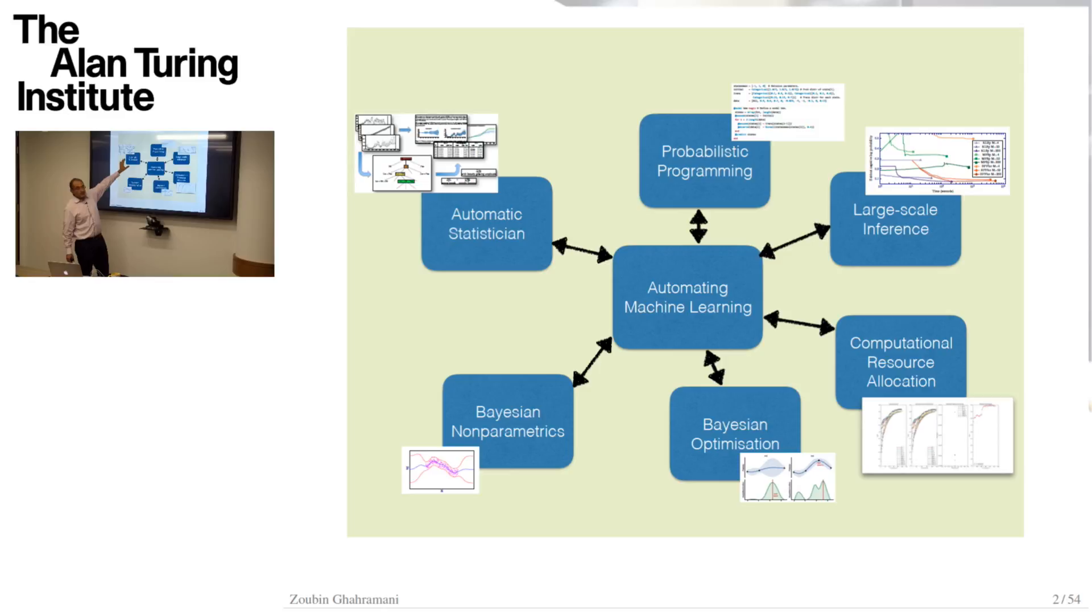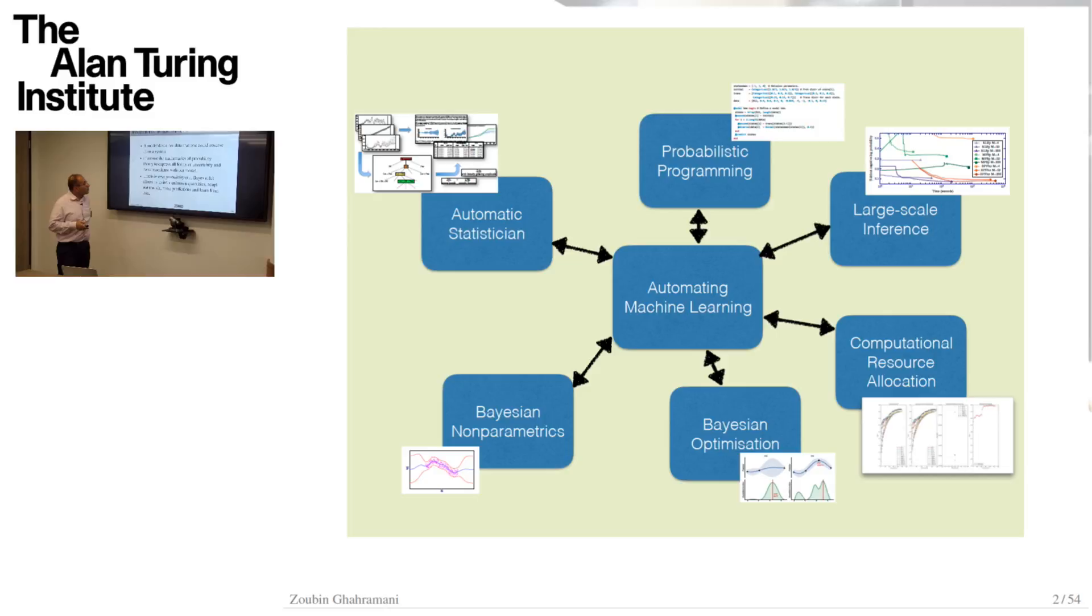One of these areas that I'm going to talk about in more detail is called the automatic statistician, or if you're a statistician, you can call it the automatic data scientist if you prefer. I'm also going to talk about probabilistic programming if I get a chance, and Bayesian optimization and computational resource allocation.